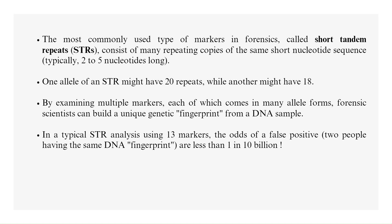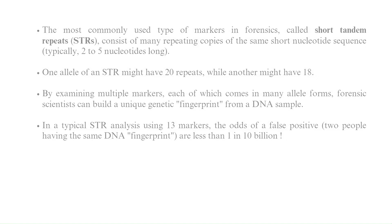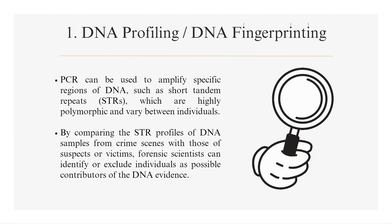One allele of an STR might have 20 repeats, while another might have 18. By examining multiple markers, each of which comes in many allele forms, forensic scientists can build a unique genetic fingerprint from a DNA sample. In a typical STR analysis using 13 markers, the odds of a false positive — two people having the same DNA fingerprint — are less than 1 in 10 billion.